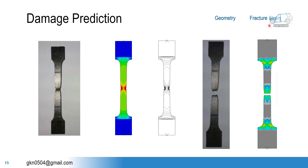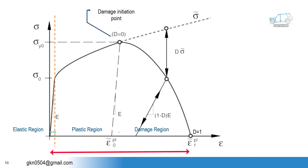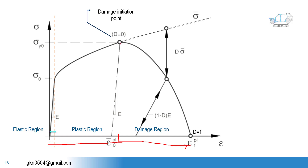The fracture strain plays a crucial role. So here we can see this is my damage initiation point, exactly at the plastic strain. The elastic and plastic strain will meet somewhere here and then my damage will start. After the plastic strain, we have the fracture strain. This is my fracture strain — not from the damage initiation point, but the fracture strain is considered from zero, from here to here. This is my fracture strain.